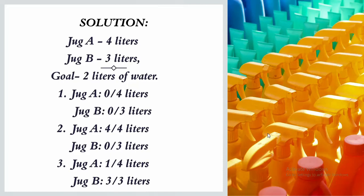So the solution is: let us take an example to illustrate the water jug problem. Suppose we are given jug A with a capacity of four liters and jug B with a capacity of three liters. We need to measure two liters of water in jug A, not jug B.